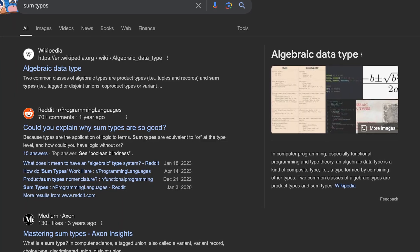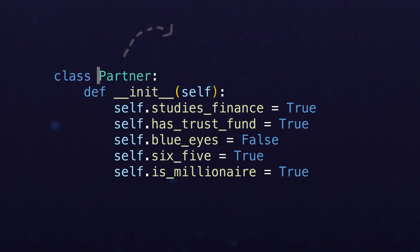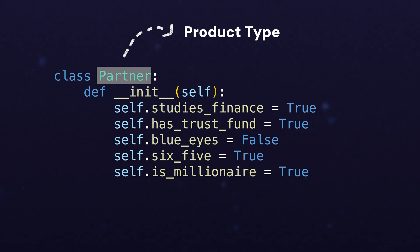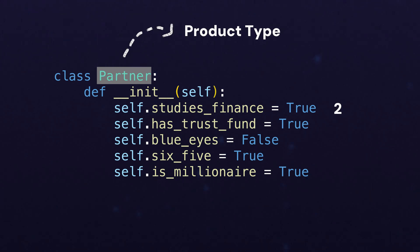Now, this is where the term product type and sum type come into play. They're also sometimes referred to as algebraic data types, just to scare the non-PhDs. The partner class is a product type because the total number of possible combinations of values is the product of the number of fields — two times two times two times two times two, however many Boolean fields we had in there. But product types are very interesting. Almost everything is a product type by default: lists, tuples, and classes with a number of properties.